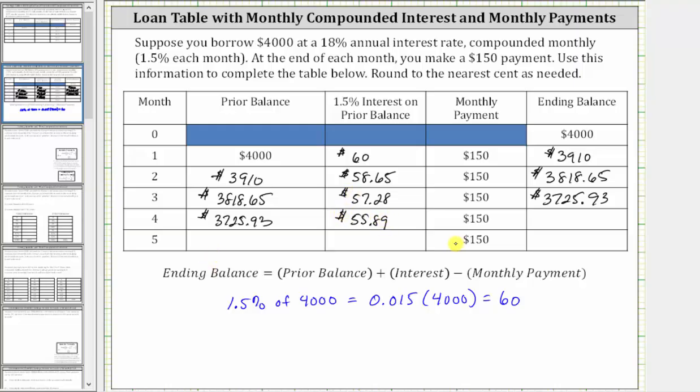Then you make the payment of $150. The ending balance for month four is 3,725.93 plus 55.89 minus 150, which is $3,631.82.